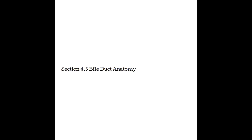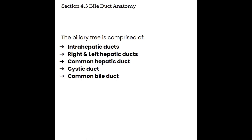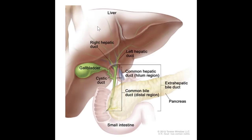Section 4.3, bile duct anatomy. The biliary tree is comprised of intrahepatic ducts which converge into the right and left hepatic ducts, which then converge into the common hepatic duct. The cystic duct leads to the gallbladder, and the common bile duct is formed when the cystic duct and common hepatic duct come together. The intrahepatic ducts start in the liver lobules as tiny bile canaliculi, converging and becoming larger as they move toward the porta hepatis, eventually consolidating into the right and left hepatic ducts, which merge to form the common hepatic duct right at the porta hepatis.